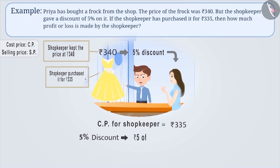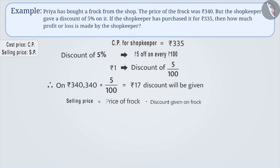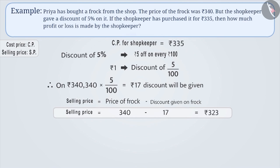Here, 5% discount means Rs. 5 off on every 100. That means a discount of 5/100 on Rs. 1. So on Rs. 340, the discount is 340 × 5/100 which equals Rs. 17. Therefore, subtracting the discount from the selling price gives the discounted selling price. Thus, the selling price will be Rs. 340 minus Rs. 17, which is equal to Rs. 323.